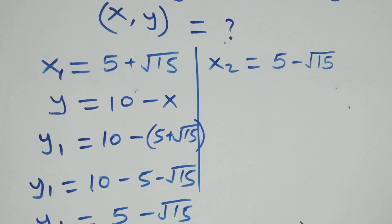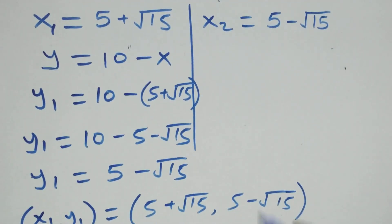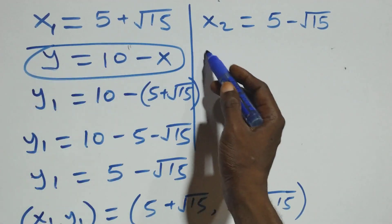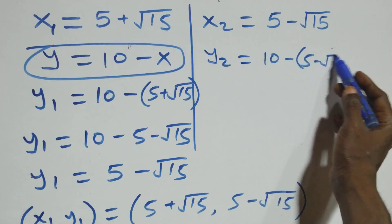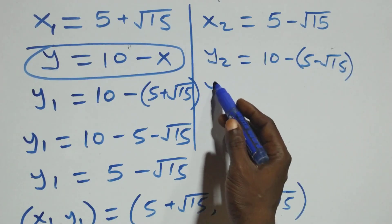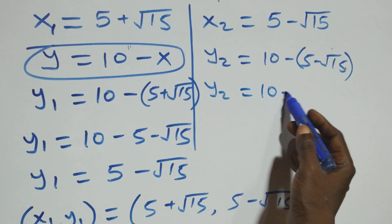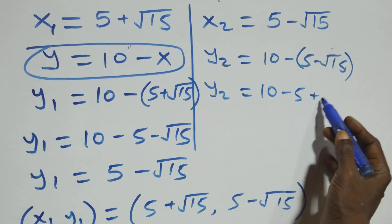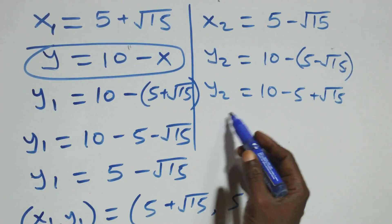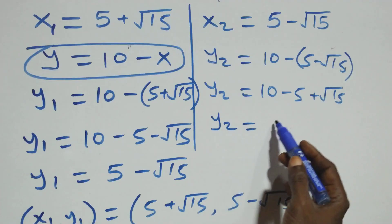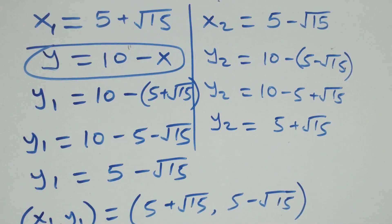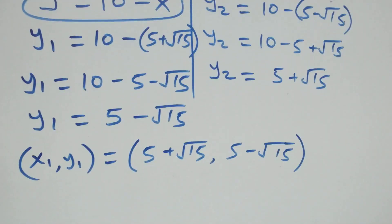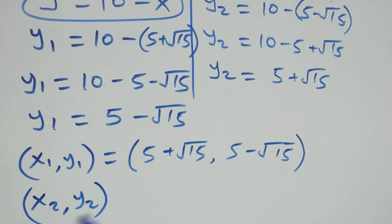We also get the corresponding value of y2. Using the same relation, y2 equals 10 minus x2, which is 10 minus (5 minus root 15). Opening the bracket gives y2 equals 10 minus 5 plus root 15, so y2 equals 5 plus root 15. The second solution pair (x2, y2) is (5 minus root 15, 5 plus root 15).